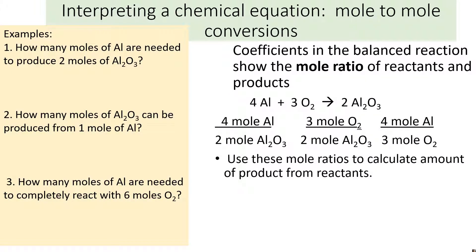Let's talk about interpreting a chemical equation and what the numbers in these equations really mean. The coefficients in the balanced reactions — these numbers — refer to the quantities of each element or compound needed to do the reaction. So it really means that four atoms of aluminum react with three molecules of oxygen to give you two molecules of aluminum oxide. We can use these to predict how much we need or how much we can get out of a given reaction.